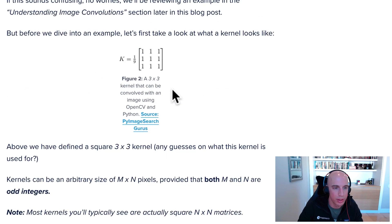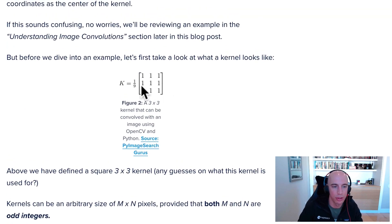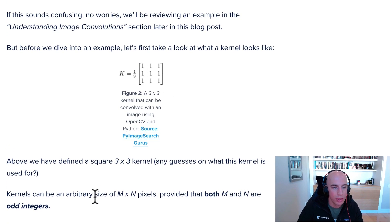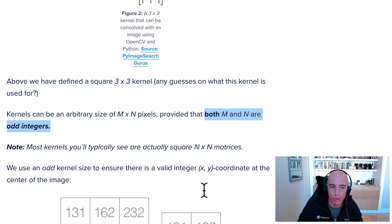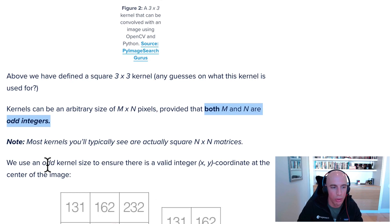What does a kernel actually look like? They're always odd values. Kernels can be of arbitrary size m by n, provided that both m and n are odd integers. Why would you use an odd integer? Why not an even integer?